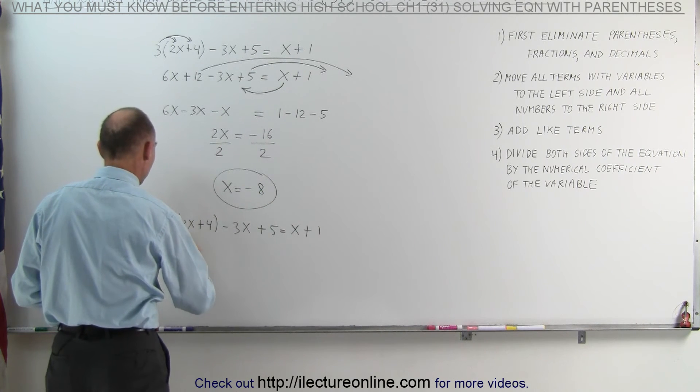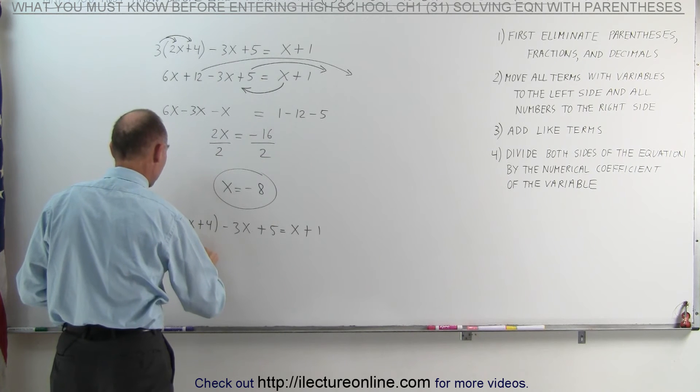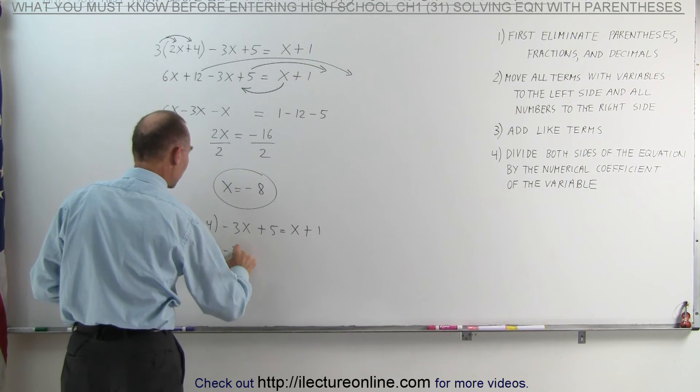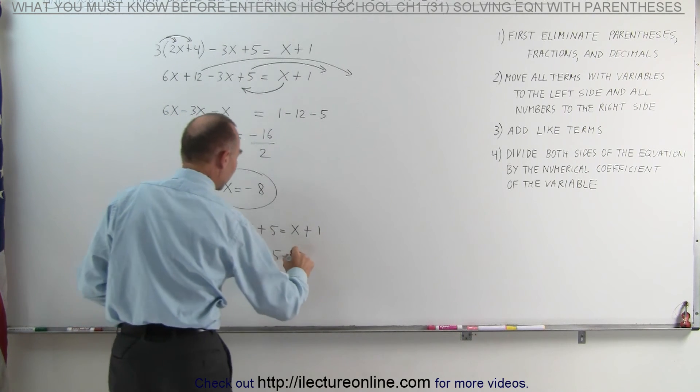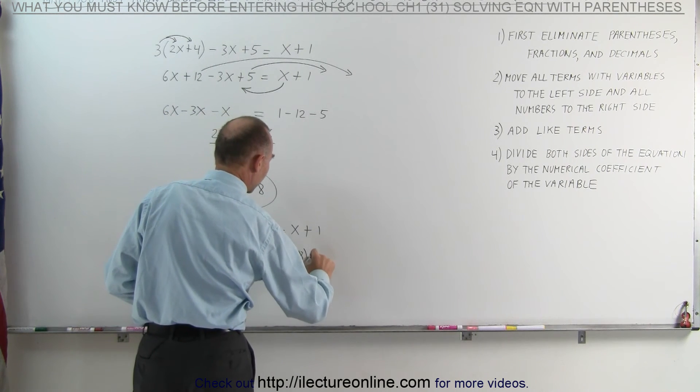We're now going to substitute the negative 8 into each x. This gives us 3 times 2 times negative 8 plus 4 minus 3 times negative 8 plus 5 equals negative 8 plus 1.